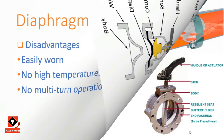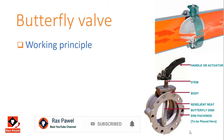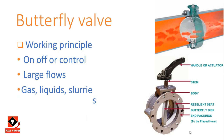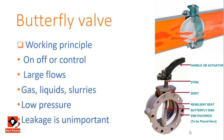Working principle of the butterfly valve: this valve has a rotating disc in the pipe section body, where a stem passes through the disc supported by both ends of the body. It can be used for both on/off and control applications while handling large flows of gases or liquids, including slurries. The butterfly valve is used for low pressure applications where leakage is not critical.